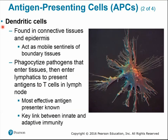Dendritic cells are the most important APCs because antigen presentation is their only function — macrophages and B cells have other functions, but dendritic cells have one job. They're found in connective tissues and the epidermis, where they phagocytize pathogens that enter tissues, then travel to the lymphatic system to present those antigens to T cells in the lymph nodes. Because antigen presentation is their sole purpose, they are the most effective antigen presenters, and they serve as a key link between innate and adaptive immunity.